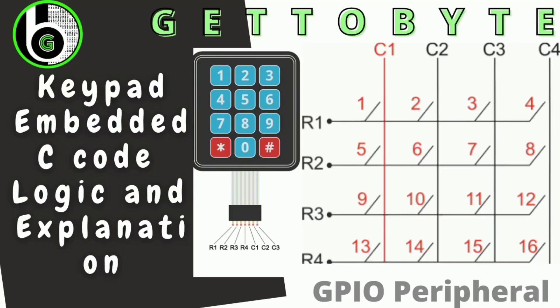Hello guys, welcome back to the channel. Today in this video I am going to tell you the logic and explanation behind the working of a keypad module and its embedded C code. I am going to tell you the logic for any microcontroller and how you can interface it - that same logic goes to any microcontroller. You just take note of the GPIO registers, as this module is interfaced using a GPIO peripheral. I am going to demonstrate this for a 4x3 and 4x4 keypad module, but the logic applies to any keypad module you want to work with.